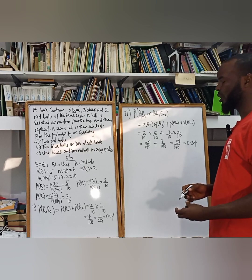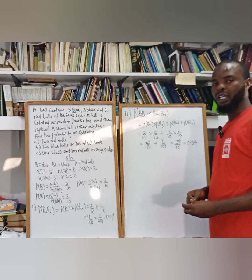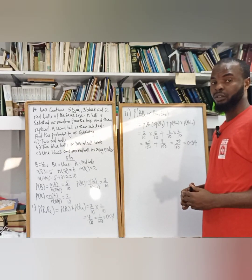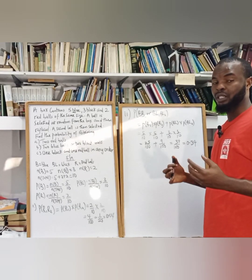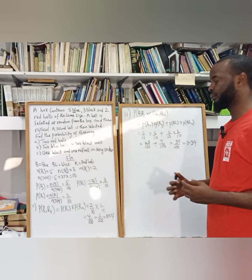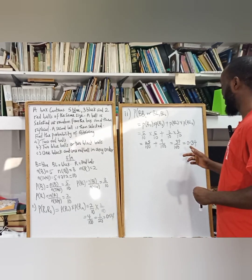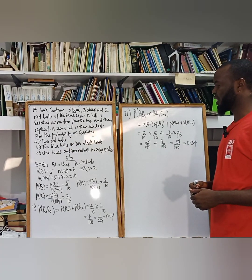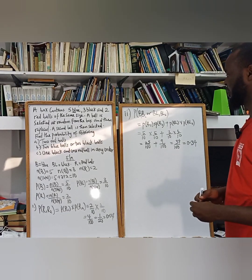If you recall from the first episode, the probability of any event should lie between 0 and 1, so it must never exceed 1 and you cannot have a negative probability.